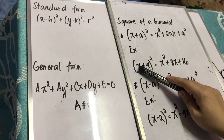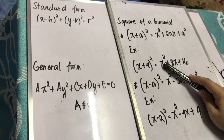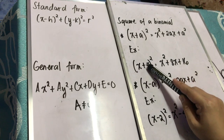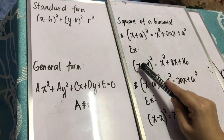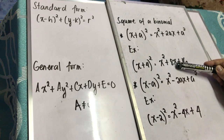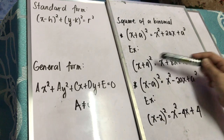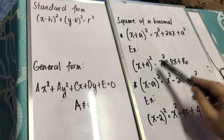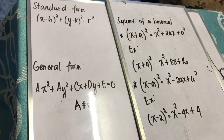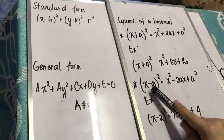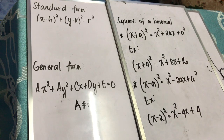For example, if you are given the expression quantity of x plus 4 squared, x is the first term and 4 is the second term. The first step is square the first term, so x squared. Then multiply the first term and the second term by a constant 2: 4 times x is 4x times 2, that's 8x. Then square the second term: 4 times 4 is 16. Therefore the product of quantity of x plus 4 squared is x squared plus 8x plus 16.